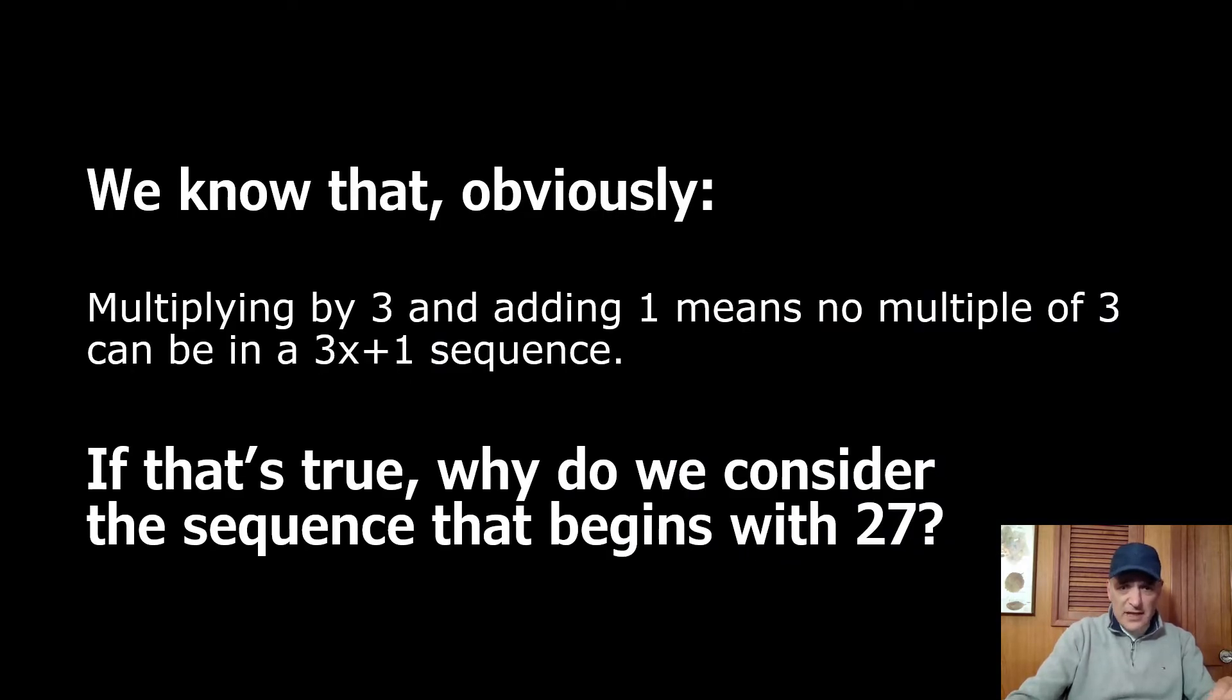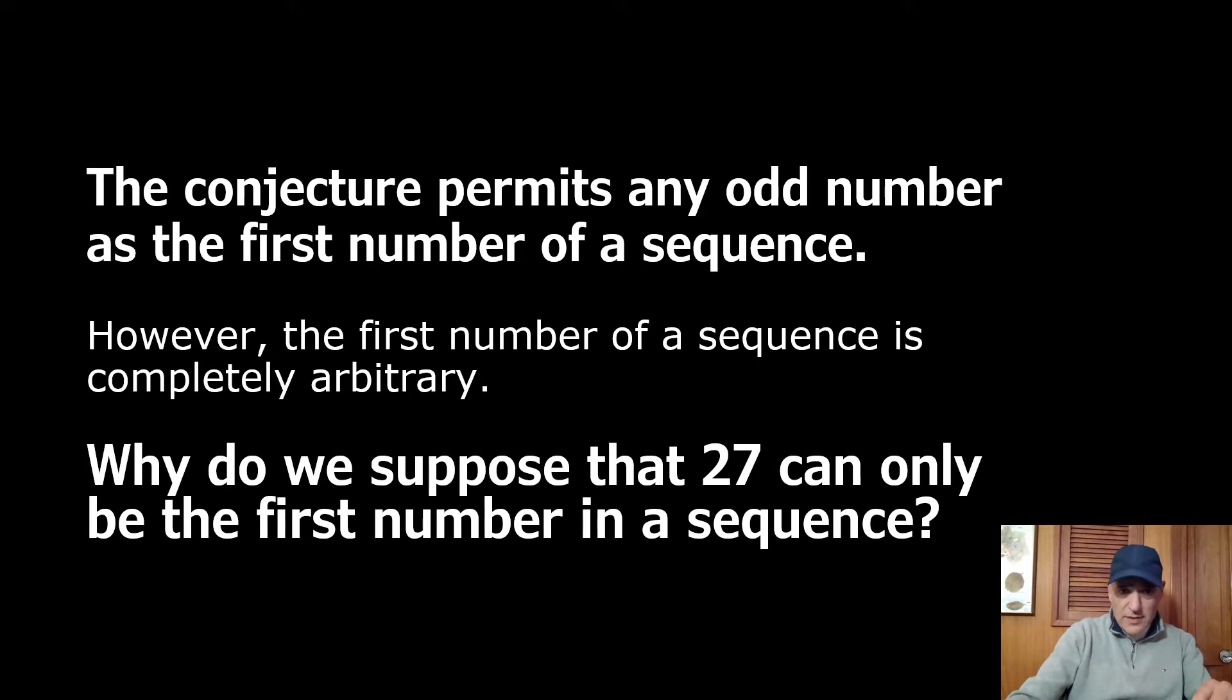We know that obviously multiplying by three and adding one means no multiple of three can be in a 3x+1 sequence except to start the sequence. The conjecture permits any odd number as the first number of a sequence. However, the first number of a sequence is completely arbitrary. All sequences begin in infinity and then converge onto one.